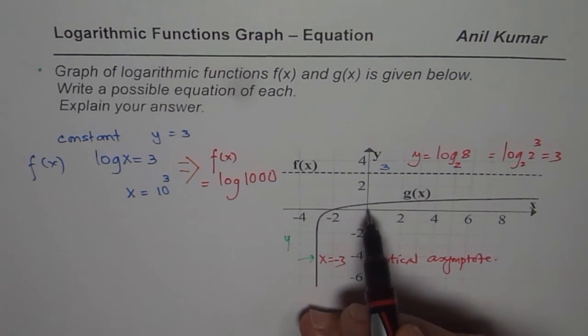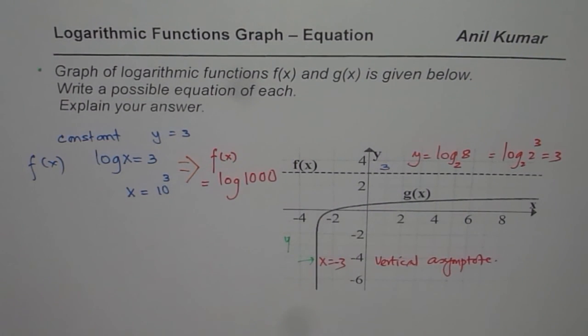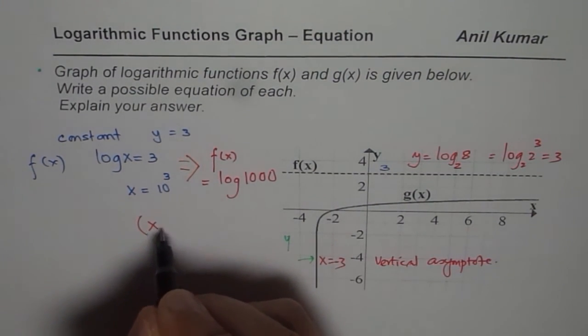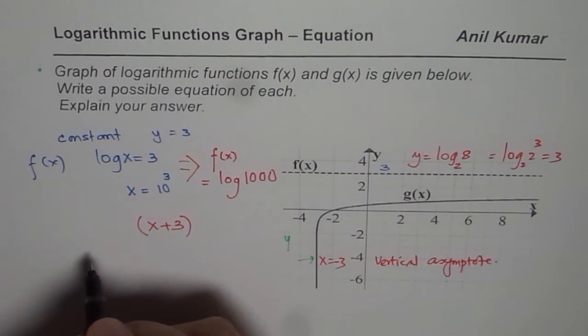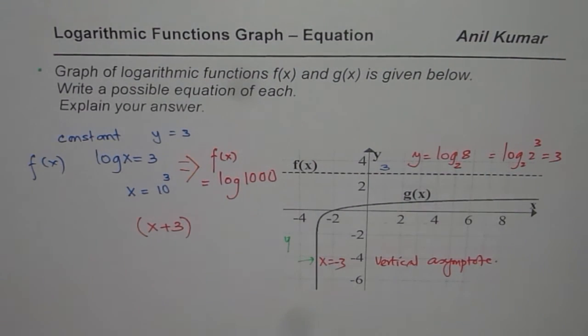That means that the whole graph has shifted 3 units to the left. So therefore, we are looking for a function which is kind of x plus 3 inside. Because it shifted 3 units to left.